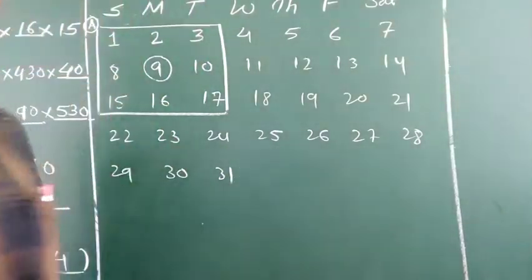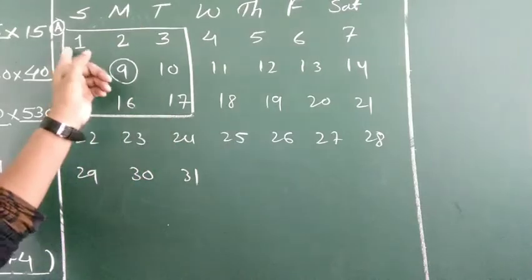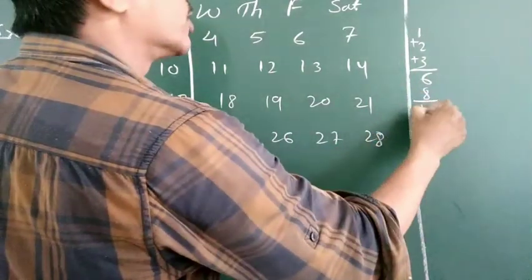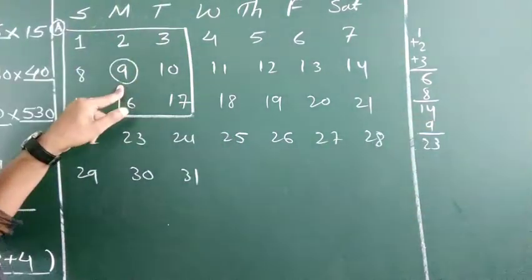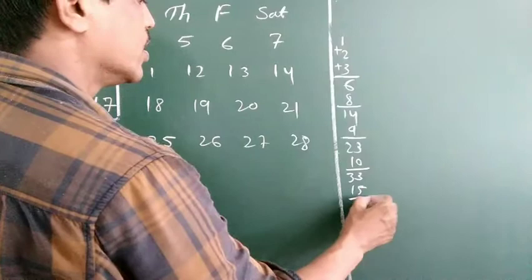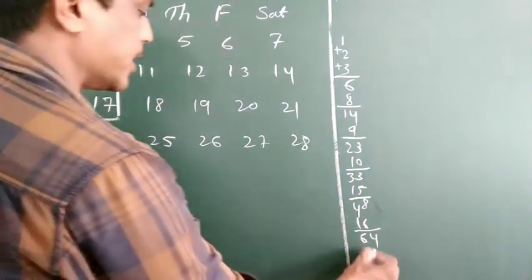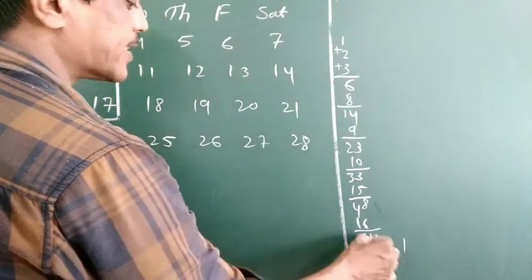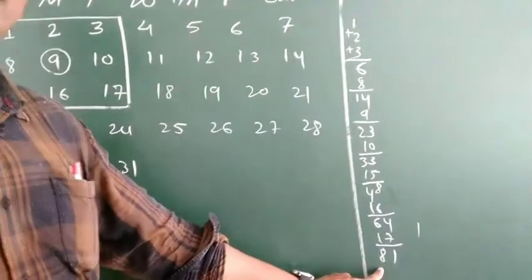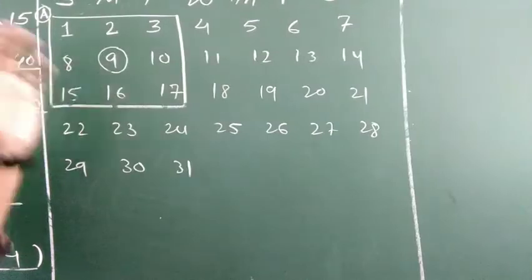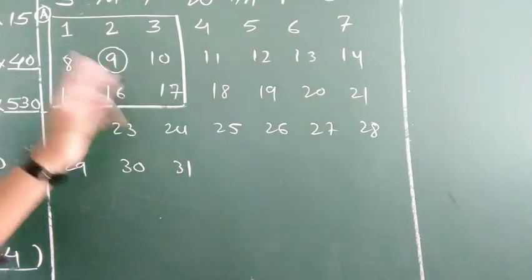Let me check: 1 plus 2 plus 3 is 6, plus 8 is 14, plus 9 is 23, plus 10 is 33, plus 15 is 48, plus 16 is 64, plus 17 is 81. Addition karke dekha — 81 came. So like this we have to find the sum of the 9 numbers, and you will get the addition of the 9 numbers equal to our magic method result.